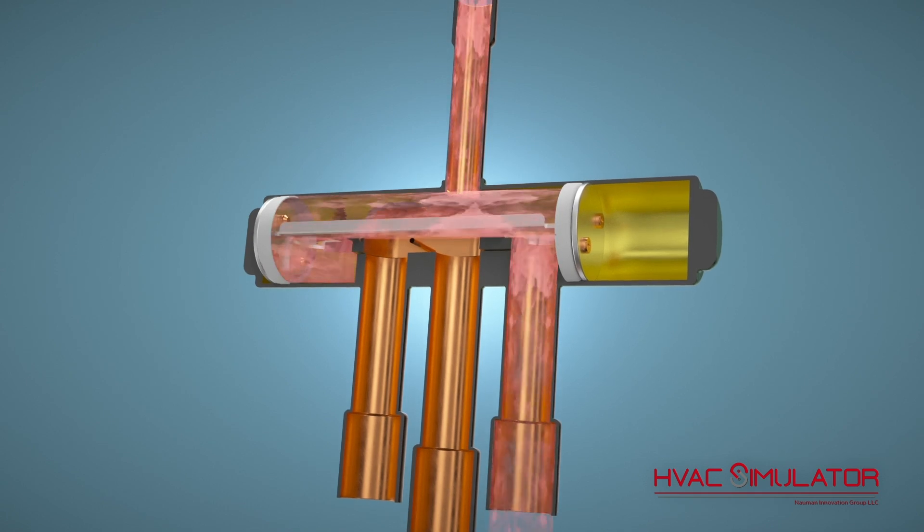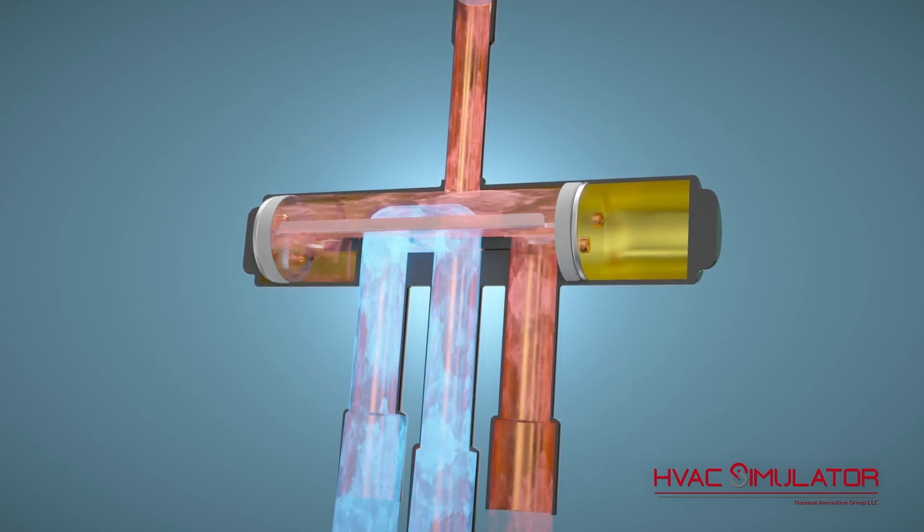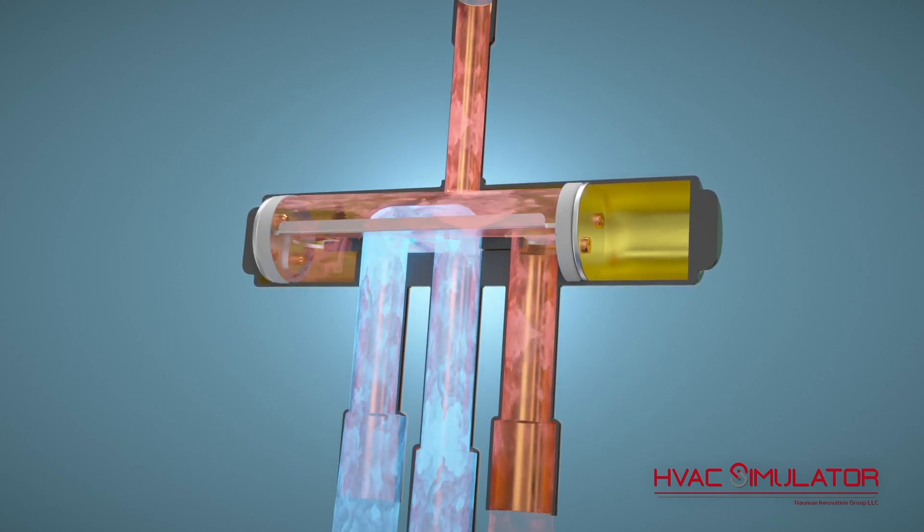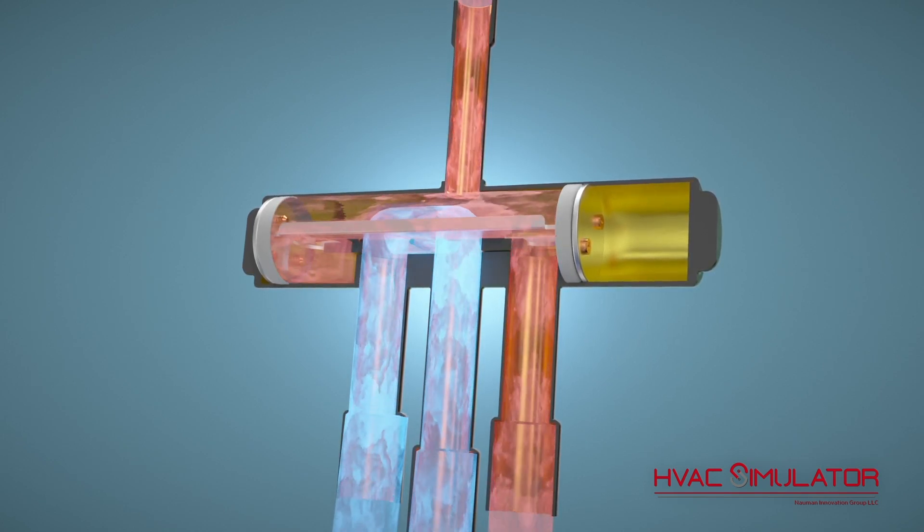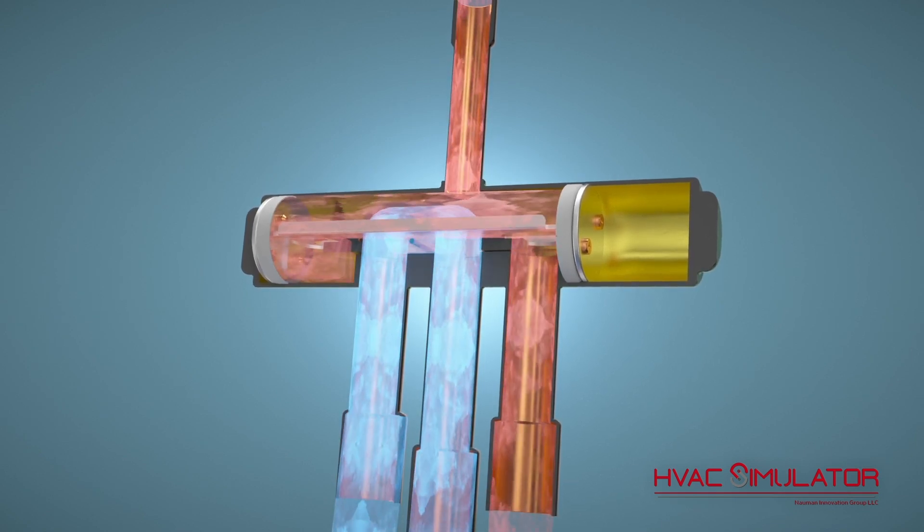The refrigerant travels through the refrigeration cycle and returns to the reversing valve as a low-pressure superheated vapor. The refrigerant travels towards the valve body and is directed into the true suction port through the slider. From there, it travels to the accumulator.